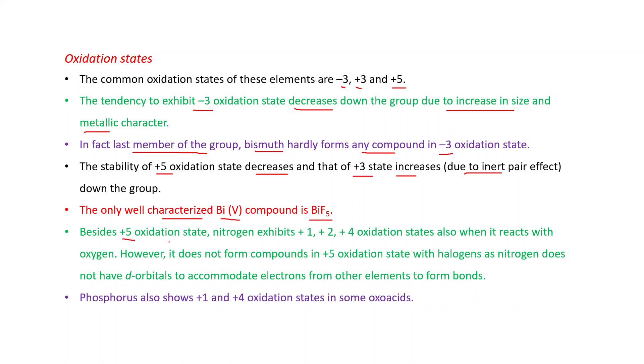Besides +5 oxidation state, nitrogen exhibits +1, +2, and +4 oxidation states also when it reacts with oxygen. However, it does not form compounds in +5 oxidation state with the halogens. Remember, pentahalides of nitrogen are not formed because nitrogen does not have d orbitals to accommodate electrons from other elements to form bonds. Phosphorus also shows +1 and +4 oxidation states in some oxoacids.